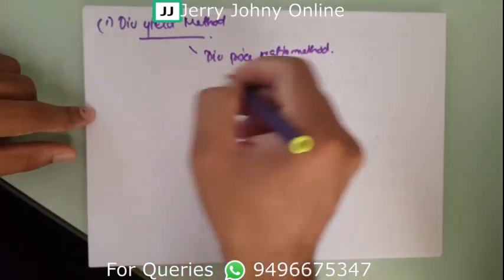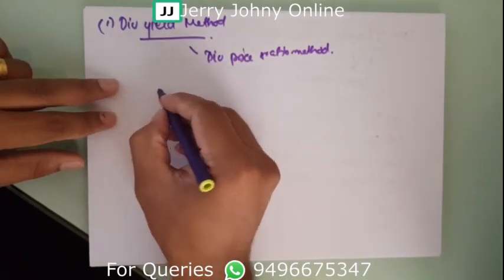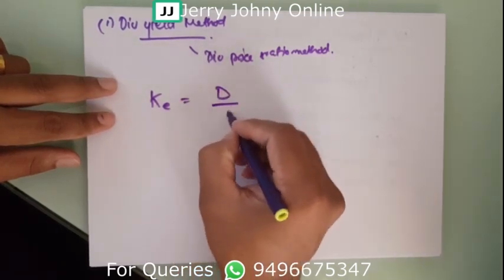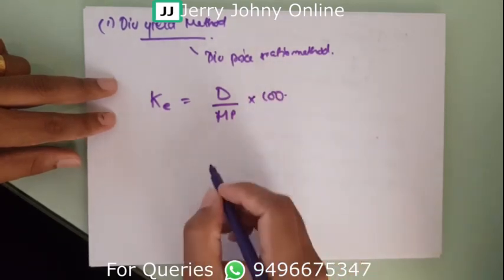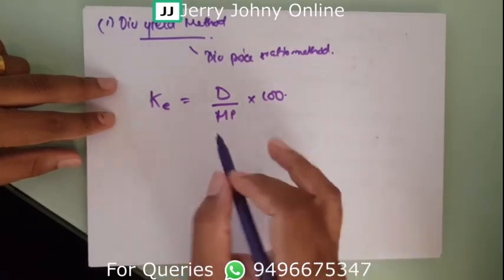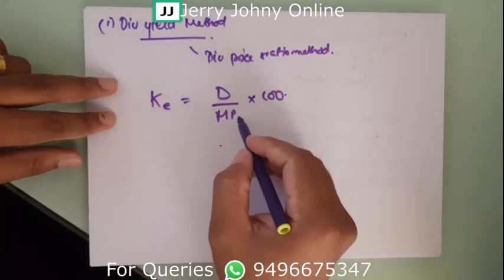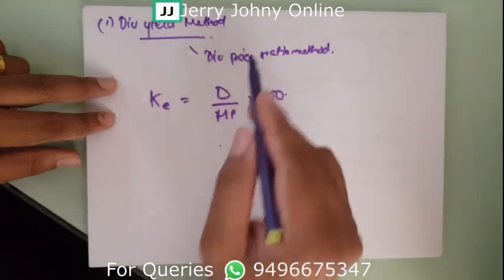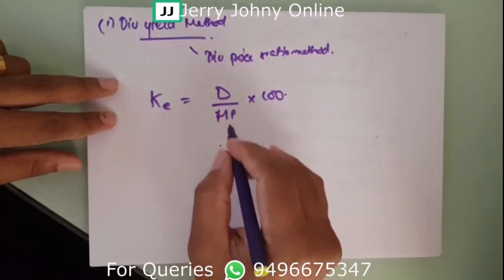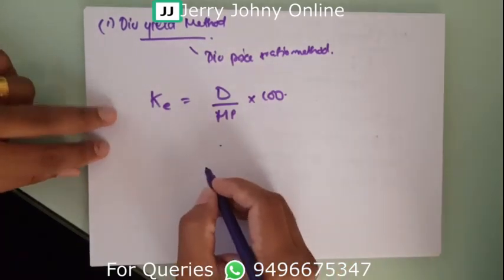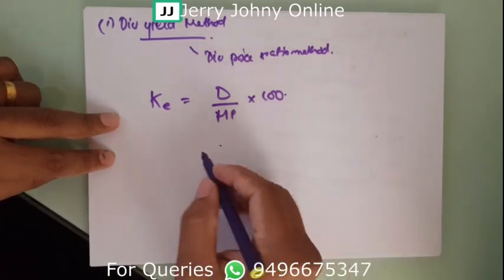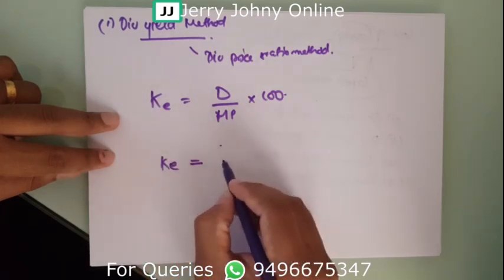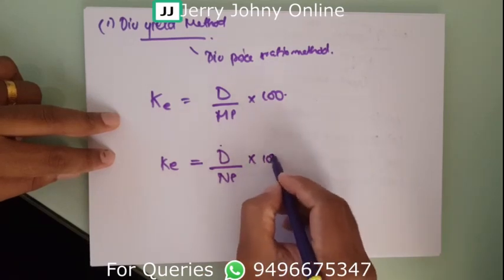Why is it called that? Let me show you the formula. As always, cost of capital will be represented as KE for cost of equity. KE is equal to D divided by MP into 100, where D is the dividend paid or expected, and MP is the market price. For new shares, if flotation costs are involved, we use net proceeds: KE equals D divided by NP into 100, where NP is net proceeds.